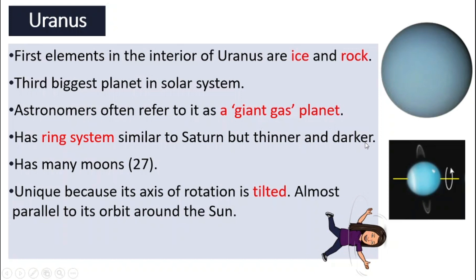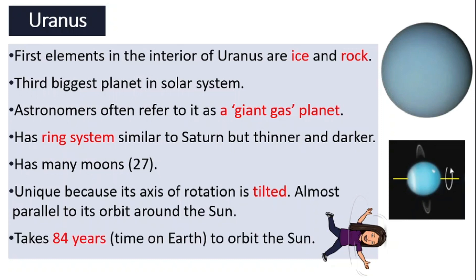So we have two special planets that rotate differently. Venus rotates the other way compared to the rest of the planets. Uranus rotates on an axis that is already tilted — it is as if Uranus is laying down and rotating. And it takes Uranus 84 years to orbit the Sun. That is a long time.